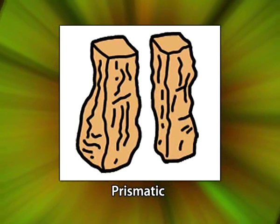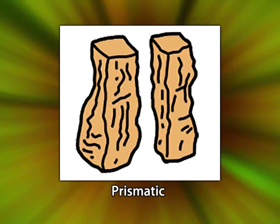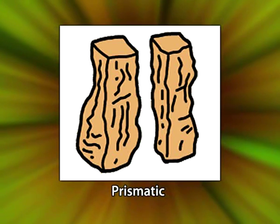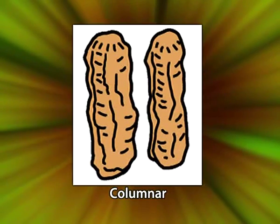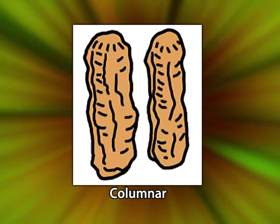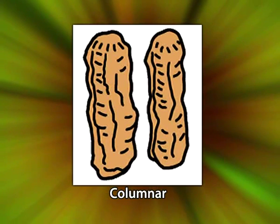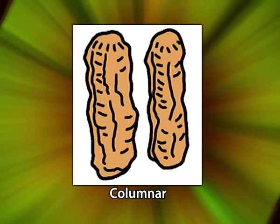In the prismatic structure, the units are vertically longer with flat or rounded vertical faces. The vertices may be angular or sub-rounded, and the tops of prismatic units are somewhat indistinct and normally flat. Another type is columnar structure, where units are similar to prismatic with vertically long, flat or somewhat rounded faces, but the tops of columns are very distinct and normally rounded.